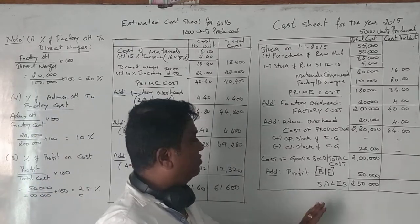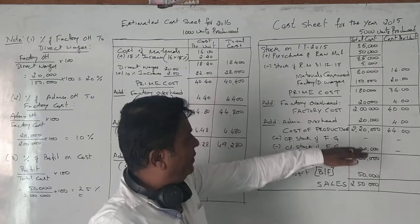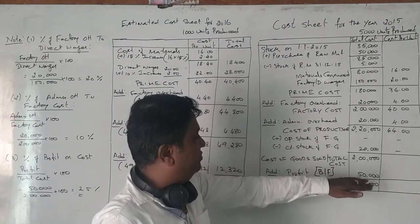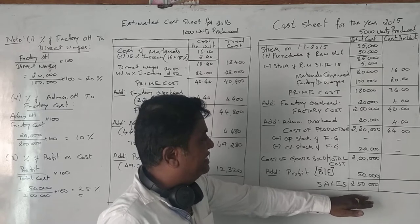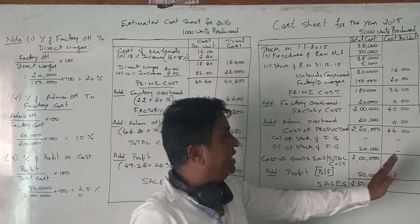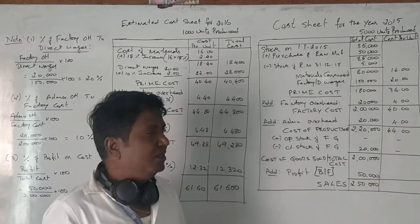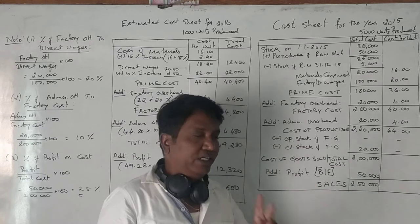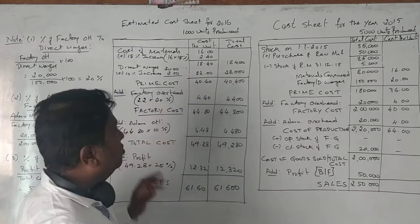So this completes the 2015 cost sheet. Note that from the closing stock of finished goods onwards — cost of goods sold, profit, and sales — we do not calculate per unit figures.